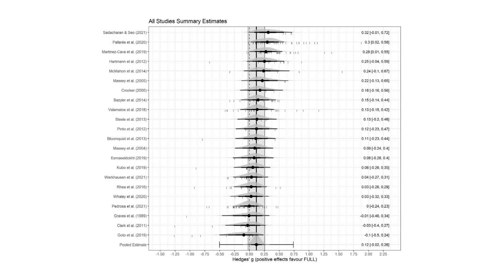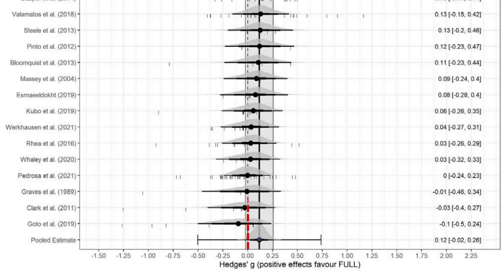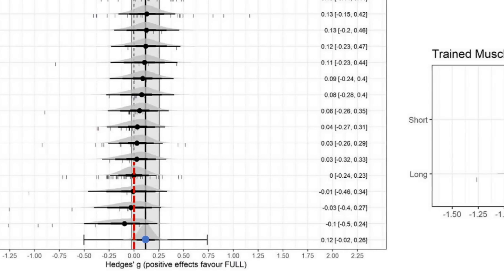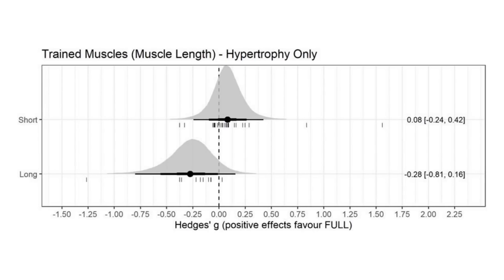Overall, it was found that full range of motion training results in superior muscle growth compared with partial range. This can be seen with this point being towards the right side of the midline, indicating a superior effect of full range of motion. However, in a subgroup analysis, full range of motion was compared between partials in the shortened and lengthened ranges of motion. It was found that shortened partials were less effective than full range of motion, but lengthened partials usually result in superior growth compared with full range of motion training.